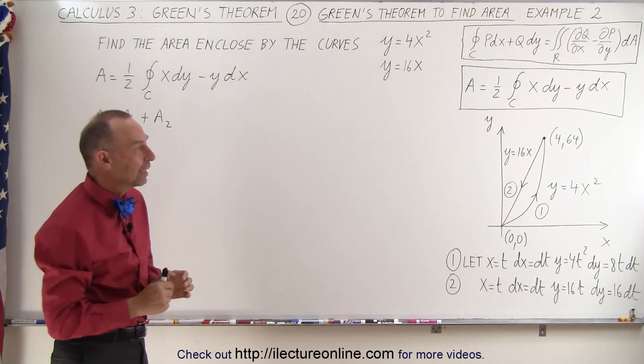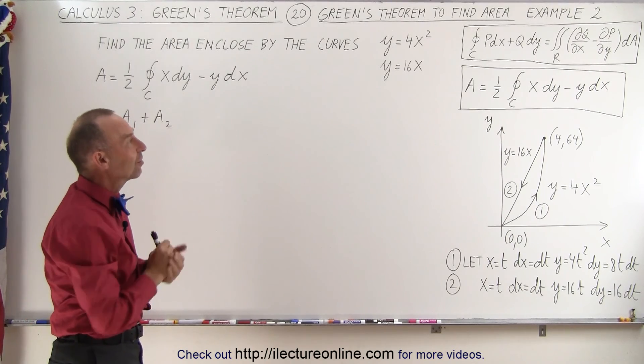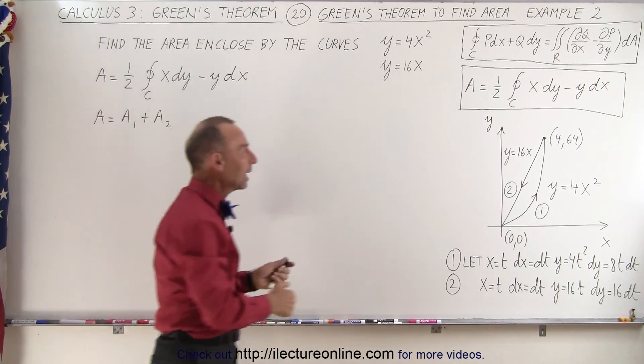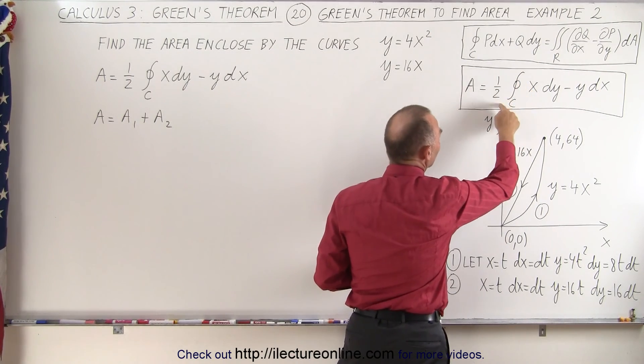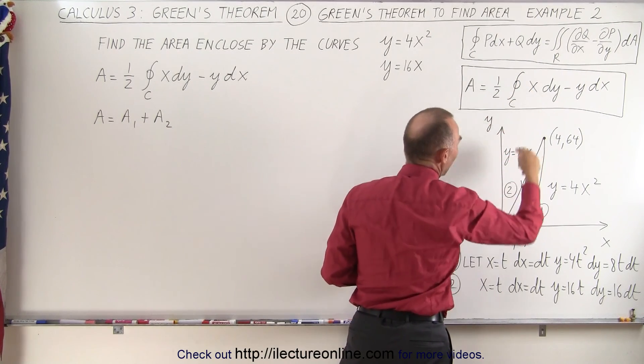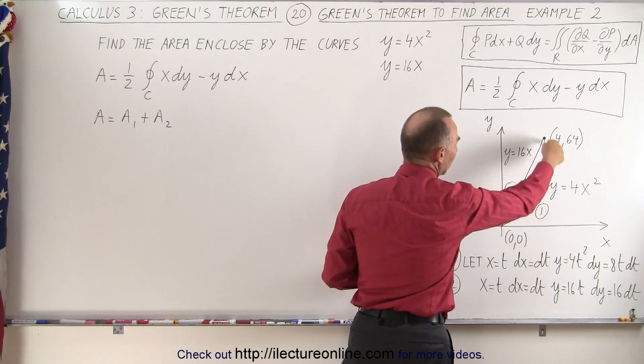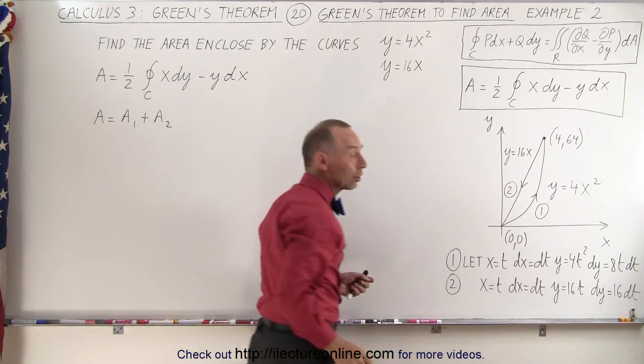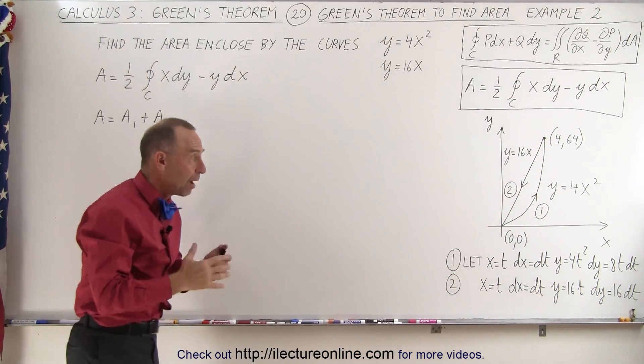But let's see how we would do it if we were to apply the Green's Theorem equation, where the area is equal to one-half times the line integral of x dy minus y dx. And notice that we're going to integrate in a counterclockwise direction, which is a positive orientation.